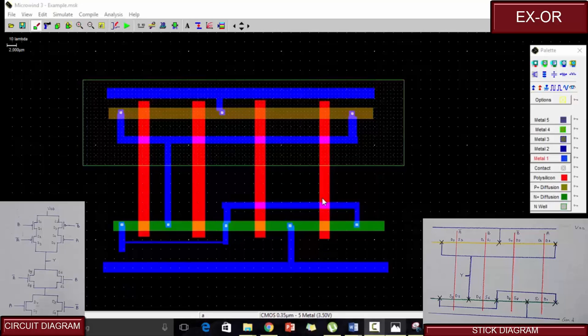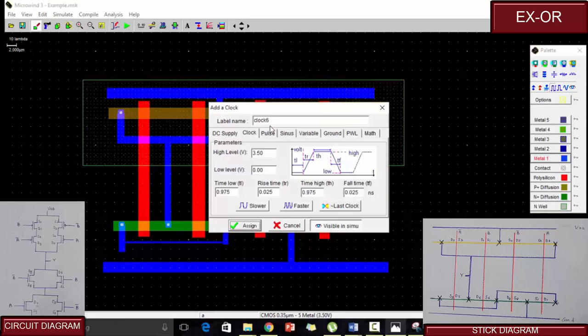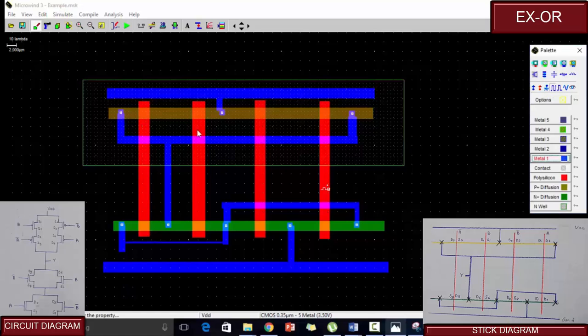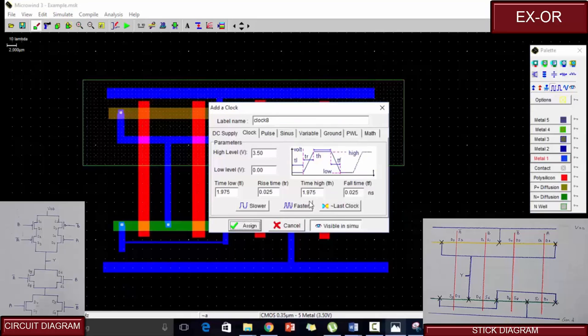Now let us give the polysilicons a clock signal according to the inputs. We know that this polysilicon is referred to as A bar, whereas this polysilicon is referred as A. Adding a clock to this polysilicon, let us name it as A. Assign. This polysilicon is nothing but A bar, so let us assign this as A bar. For this polysilicon, this would be the negation of A. So this can be done simply by applying the clock and giving negation of the last clock from here. Assign.